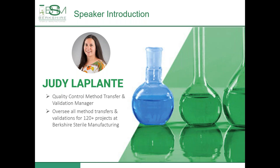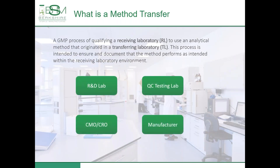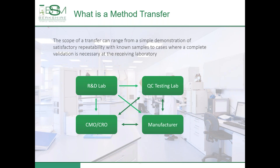Thank you, Sarah, for the introduction. Let's get right into it. What is a method transfer? A method transfer is a GMP process of qualifying a receiving laboratory to use an analytical method that originated in a transferring laboratory. The process is intended to ensure and document that the method performs as intended within the receiving laboratory environment. Method transfers can occur between multiple internal and/or external labs, and may or may not involve the original lab that developed and validated the method. An example is a procedure developed and validated in an R&D lab, transferred internally to the same company's manufacturing site, and again later transferred to an external contract organization. This process can take months or even years. The scope of a transfer can range from a simple demonstration of satisfactory repeatability with known samples to cases where a complete validation is necessary at the receiving laboratory.